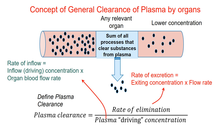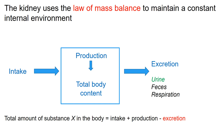The kinetics of this process has been described as the most important of all pharmacokinetic principles. The second principle used to explain renal clearance is the law of mass balance, which is necessary to maintain a constant internal environment. Intake must equal excretion; total body content is the intake plus any production minus the excretion. If anything goes wrong with excretion, the internal environment will be disrupted — as seen in renal failure, which is diagnosed by an increase in plasma urea concentration, plasma creatinine concentration, or plasma potassium concentration.